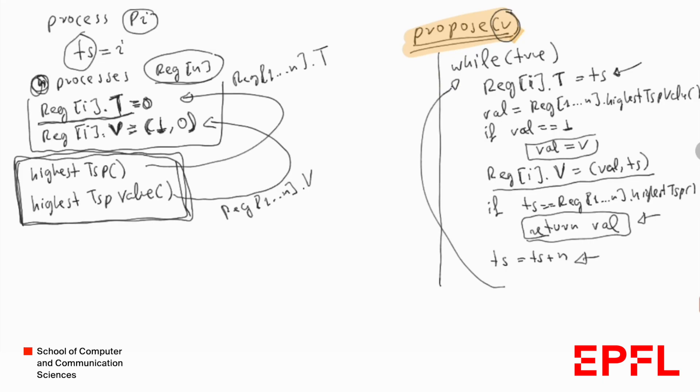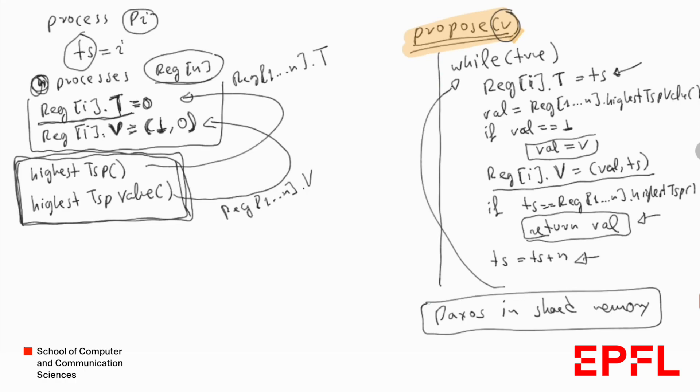An interesting fact: this algorithm combined with a leader election algorithm corresponds to Paxos in shared memory. For those who know Paxos, they can see that some ideas reappear. A process proposes a timestamp, then adapts the value associated with the highest timestamp, and finally if this process has the highest timestamp, it decides.